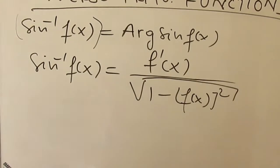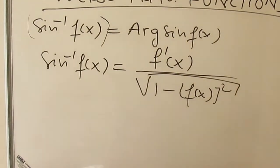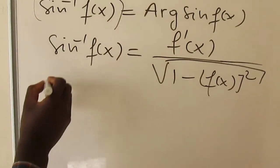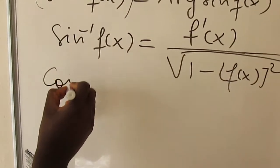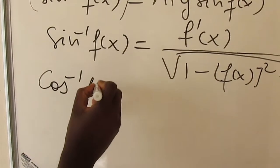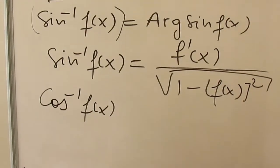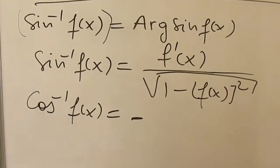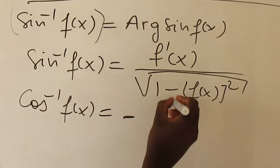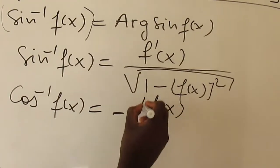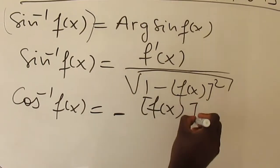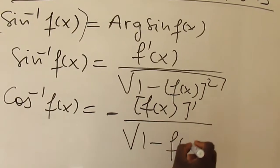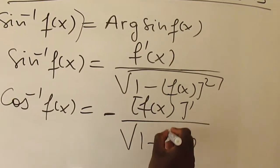Other than arc sine, we have arc cos of f(x). With arc cos, you start with a negative sign. Then you derive f(x) over the square root of 1 minus f(x) squared.